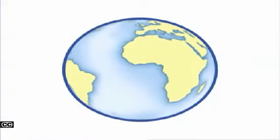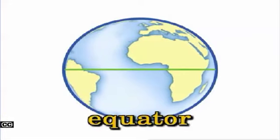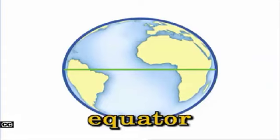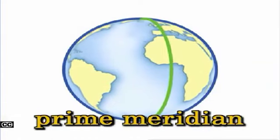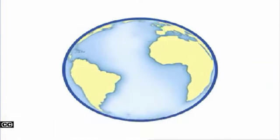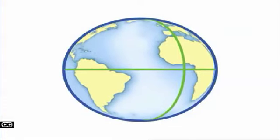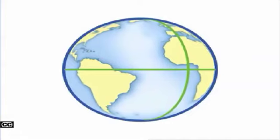Two other lines help us divide Earth. The equator is the line of latitude that circles the middle of Earth. The prime meridian is Earth's main line of longitude. These lines, the equator and the prime meridian, allow us to divide Earth into hemispheres.